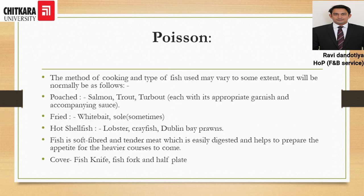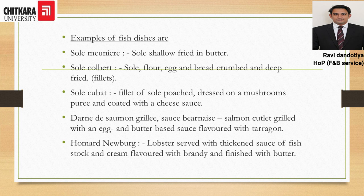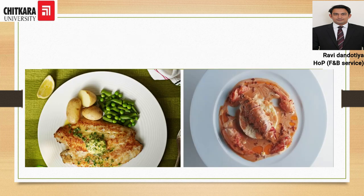The next course is poisson, in which fish preparations are served. Various styles of fish can be served, such as poached fish, fried fish, or shellfish. The cover for a fish course is a fish knife, fish fork, and a fish plate — also known as a half plate. Examples include sole meunière, sole colbert, sole cubat, salmon grillé, and homard Newburg. Homard is the French term for lobster. An image shows homard Newburg on the right and a grilled fish preparation served with potatoes, French beans, and peas on the left.